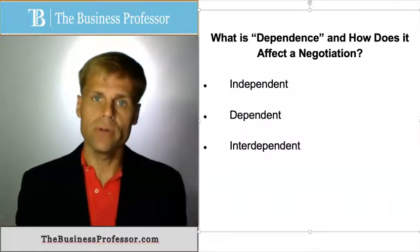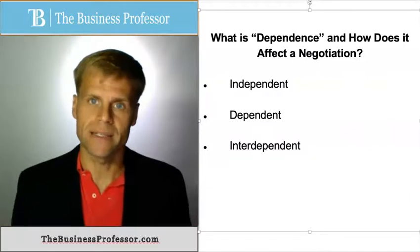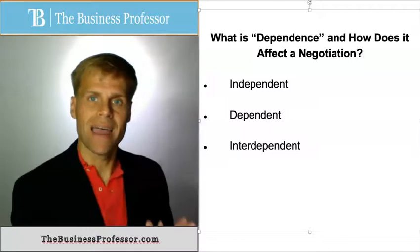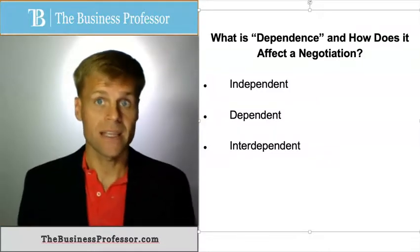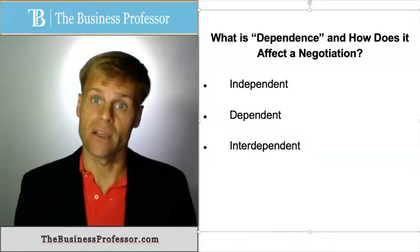And then of course, if both sides have that level of dependence, that's what we call interdependence. That is, both sides need the other side. There are actions or activities that each person needs from the other side in order to further or achieve their objective or interest in the negotiation.